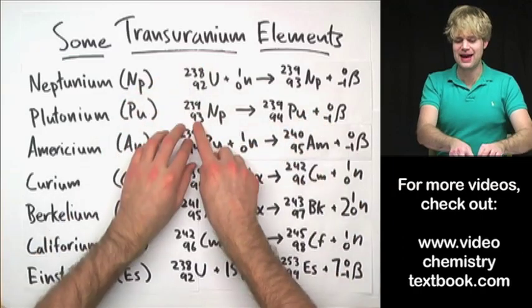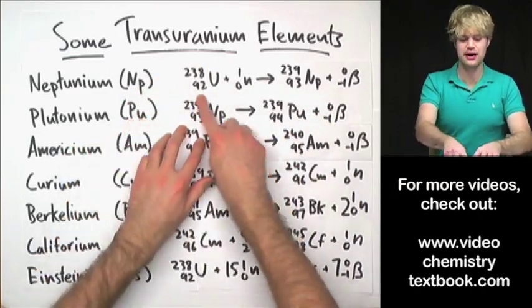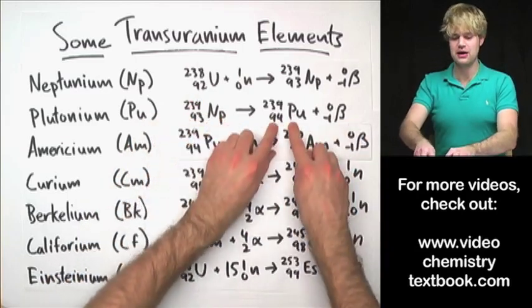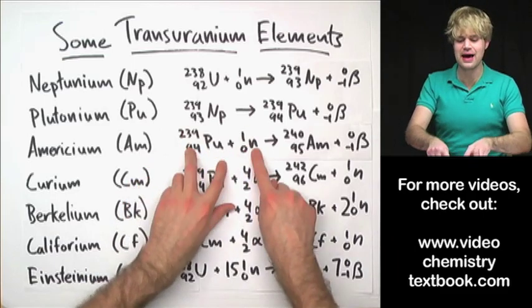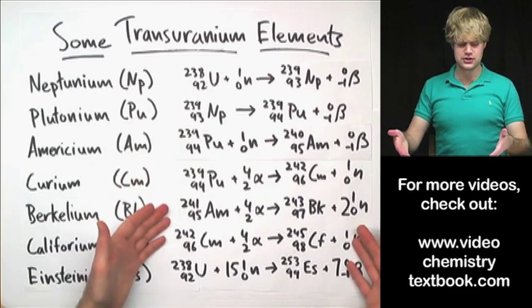And then we get various elements like Plutonium by taking something like Neptunium and then just letting it do beta decay, which makes Plutonium. Then we can take this Plutonium and add a neutron to it to get Americium, and so on and so forth.